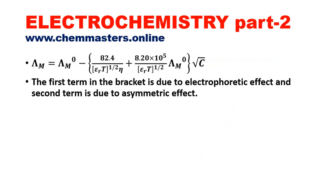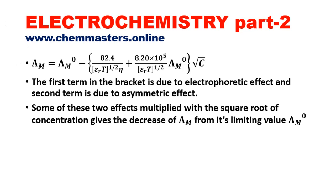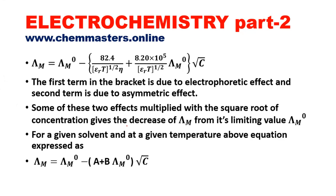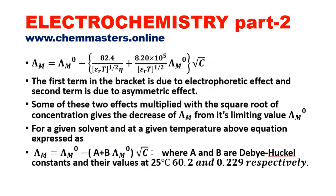Looking at the equation again: the first term on the right side in brackets is due to the electrophoretic effect, and the second term indicates the asymmetric effect. The sum of these two effects multiplied by the square root of concentration gives the decrease in molar conductance from its limiting value — that is, the molar conductance at infinite dilution or zero concentration. At 25°C, the value of A is 60.2 and the value of B is 0.229 respectively.